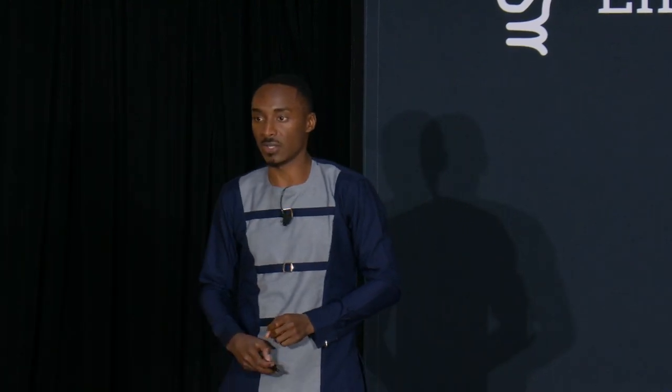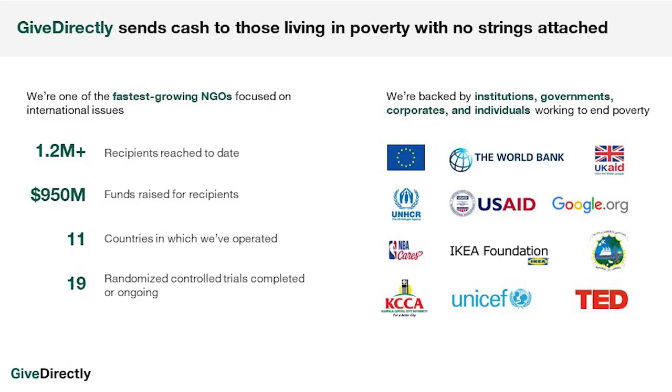GiveDirectly is an international nonprofit that does cash transfers. We send people cash all over the world in about 11 countries, no strings attached. We've been doing this for the last 10 years. During that time we've been able to raise nearly a billion dollars. We are in 11 countries including the US. We've reached approximately 1.2 million people. And we've done about 19 RCTs. There are a bunch of people that think we are doing a lot of good work and are supporting us.